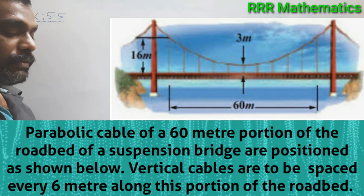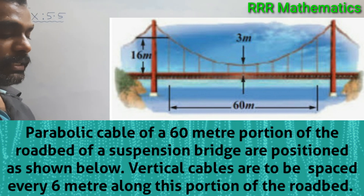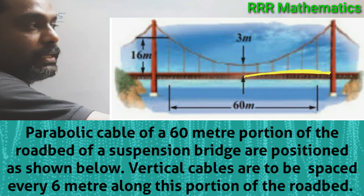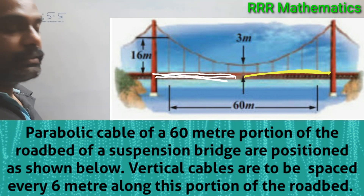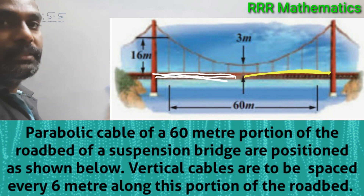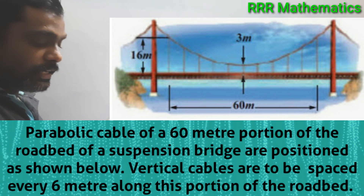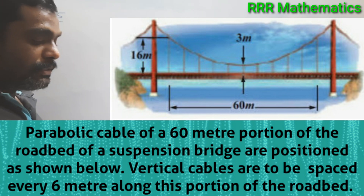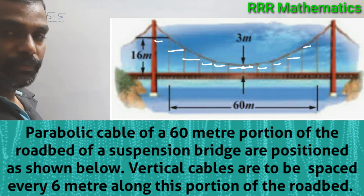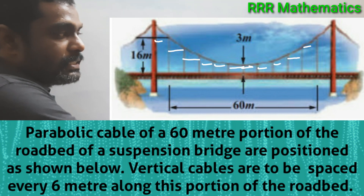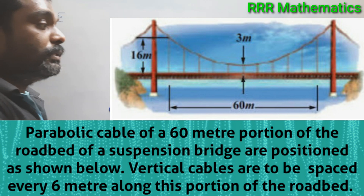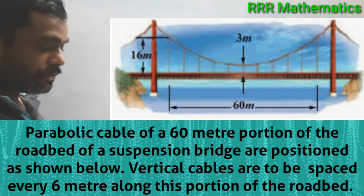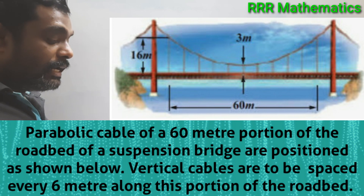From the diagram, from the center to the right-hand side is 30 meters and the left-hand side is 30 meters — totally the length is 60 meters. Vertical cables are spaced every 6 meters along the road bed, so the gap between each vertical cable is 6 meters. The total length is 60 meters (30 + 30) and the distance between each vertical cable is 6 meters.